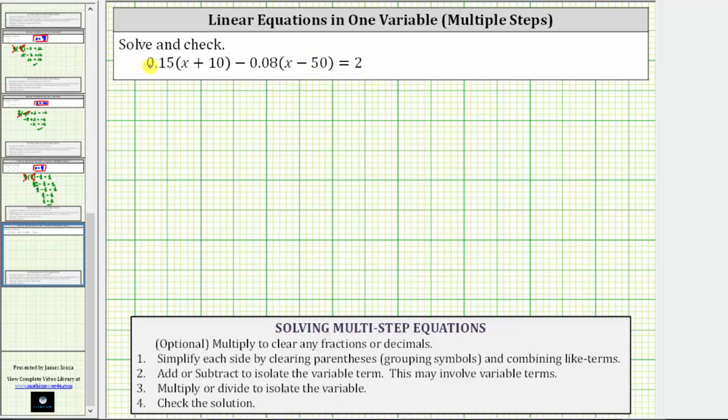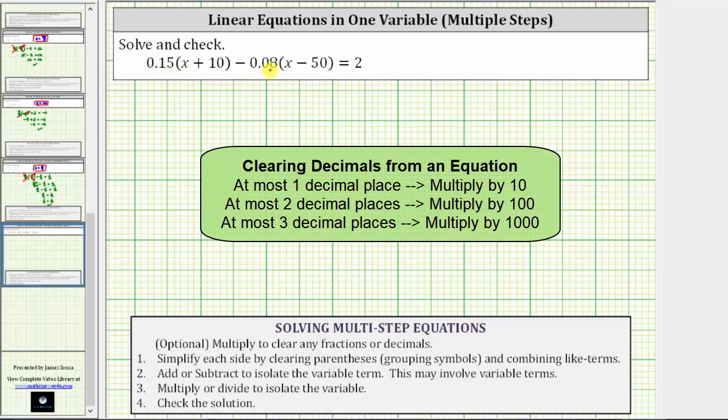Notice how the given equation contains decimals. Looking at the two decimals, notice how we have at most two decimal places, which means we do have an optional step to multiply both sides of the equation by 100 to clear the decimals from the equation before solving.